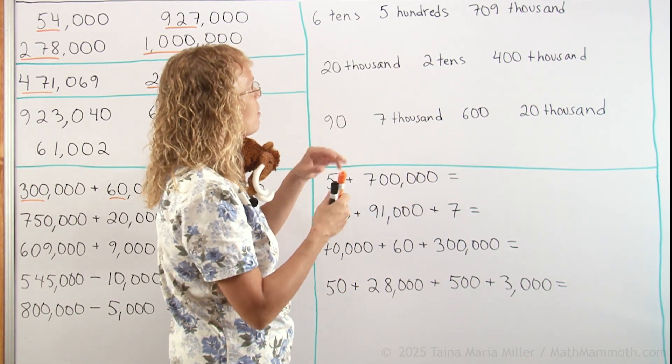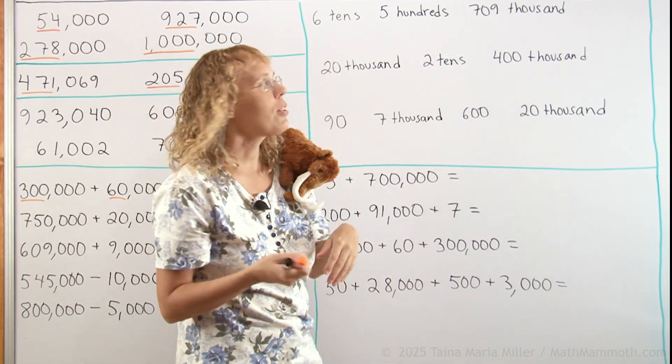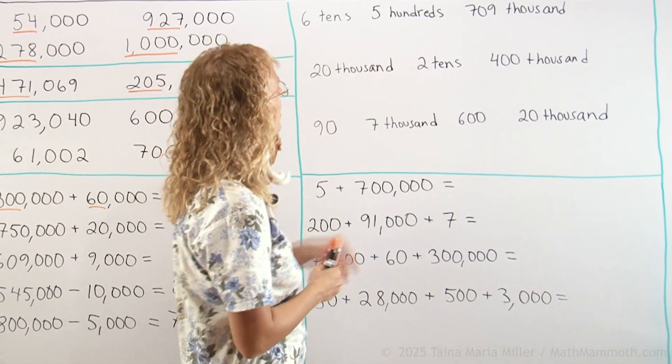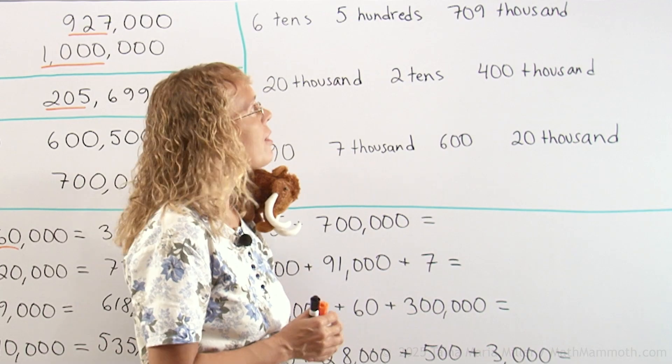We have numbers with the parts in scrambled order, and we need to write the number in its normal form. It says six-tenths, five-hundreds, seven-hundred-nine-thousand.